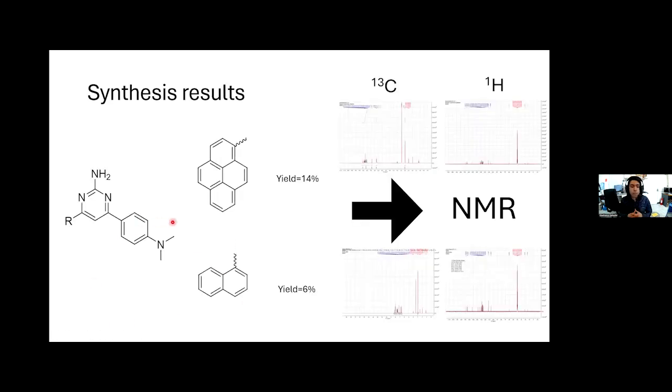This product was isolated properly, but we still have problems, like the yield—the total yield is very low. This problem is probably due to the peri-steric hindrance of these molecules, but we characterized these molecules by NMR spectroscopy for carbons and protons.